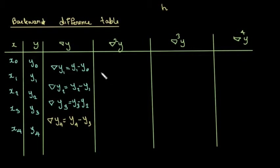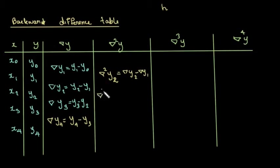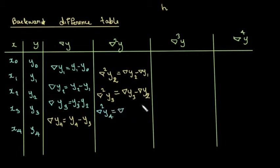Second-order differences: Δ²y2 = Δy2 − Δy1, Δ²y3 = Δy3 − Δy2, Δ²y4 = Δy4 − Δy3. Third-order difference: Δ³y3 = Δ²y3 − Δ²y2.